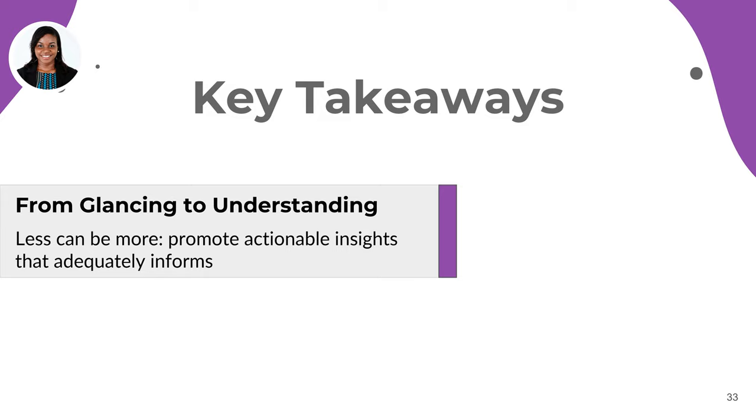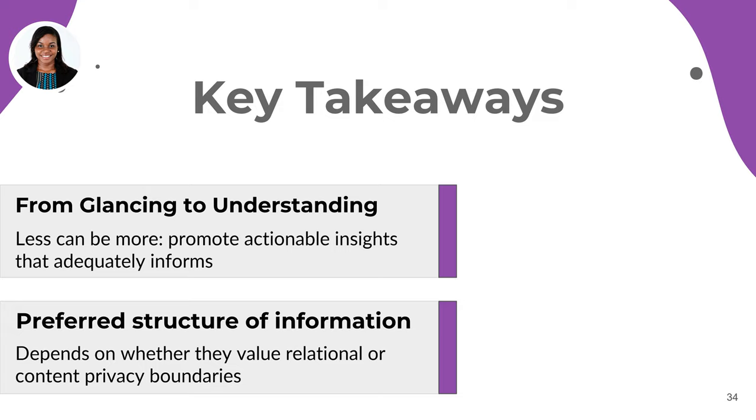To recap, some of the major takeaways and insights that were gathered were: one, less can be more. Regarding the glanceability and understanding of the interface, providing less granular information could also be more informative. This happens because users are able to abstract more data at a glance and in that way the information is easier to consume. And secondly, people's preferred structure of information has less to do with the design of the interface and more to do with how they conceptualize privacy. So it depends on whether they value relational or content privacy boundaries.